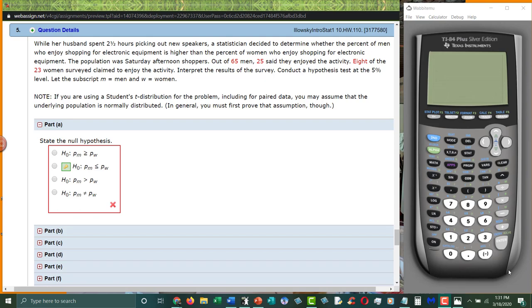For problem five, we'll be looking at two proportions and seeing if there's differences. The question is: while her husband spent two and a half hours picking out new speakers, a statistician decided to determine whether the percent of men who enjoyed shopping for electronic equipment is higher than the percent of women. Out of 65 men, 25 said they enjoyed the activity. Eight of the 23 women surveyed claim to enjoy the activity. Interpret the results of the survey and conduct a hypothesis test at 5% level.